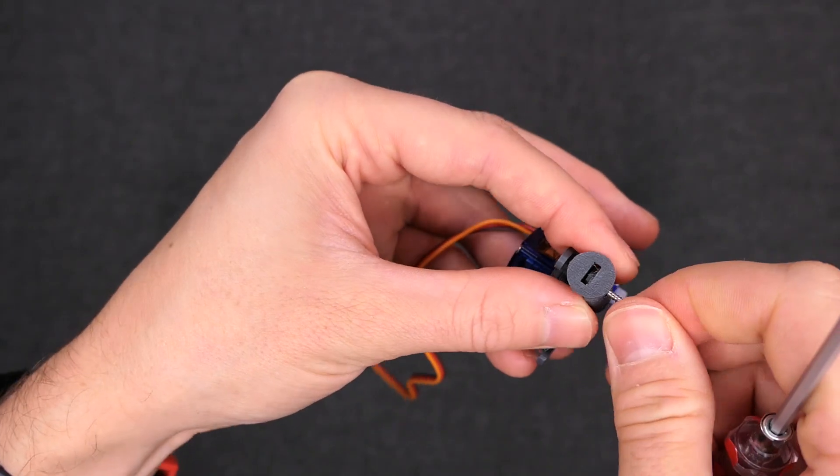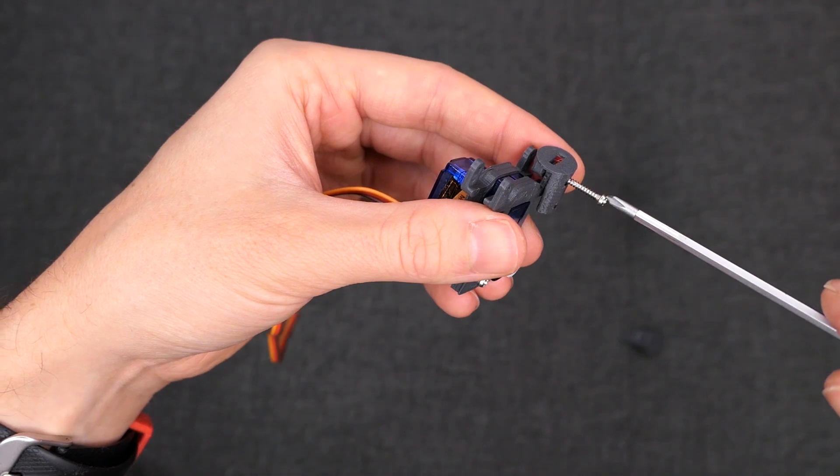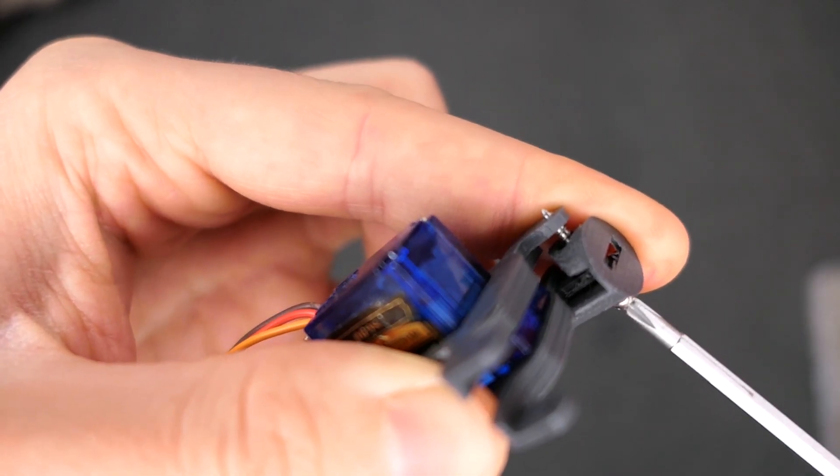Thread an M2 screw through each side of the bracket and through the eye holder. Ensure that each eye can rotate freely on its axis.